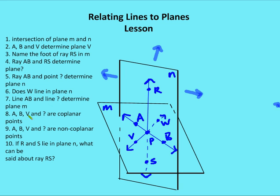Eighth, AB, V, and what point are coplanar? AB, V, and W are coplanar points. Note that AB, V, and R are non-coplanar. Also, A, R, and B are coplanar, but A, R, B, and V together are not coplanar.